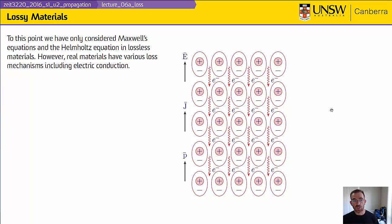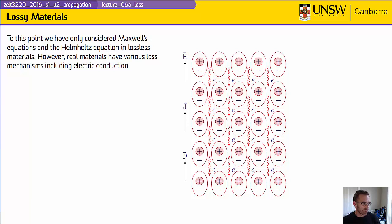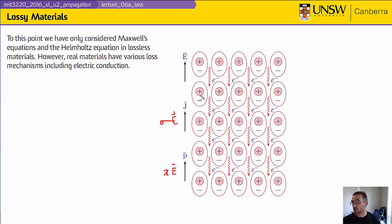So let's talk about what happens in a lossy material. Up until now we've only considered Maxwell's equations in lossless materials, but real materials have many different loss mechanisms. When we apply an electric field, we get an induced current and an induced polarization. Our induced current is of the form sigma E in our simple materials case, and our induced polarization is chi times E. The polarization is, of course, separation of charge, but the charge is still bound — the negative electrons are still bound at the positive centers.